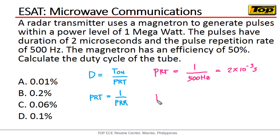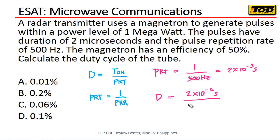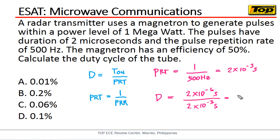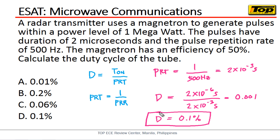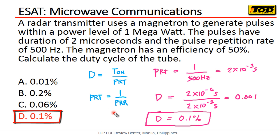Now we can easily find the duty cycle. Duty cycle equals the duration of the pulses, which is two microseconds (2 × 10⁻⁶), over the pulse repetition time, which is two milliseconds. That equals 0.0001, or 0.1 percent. So the answer is letter D, 0.1 percent. Thank you for viewing and I hope this will help you pass the board exams.